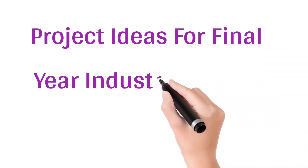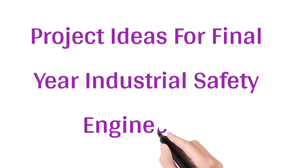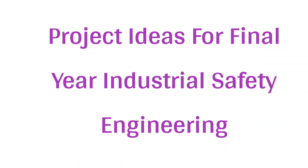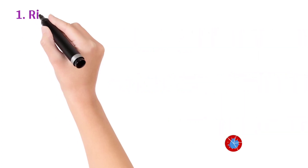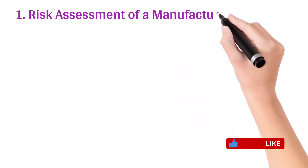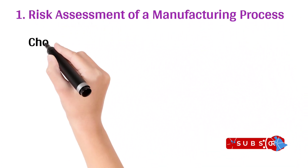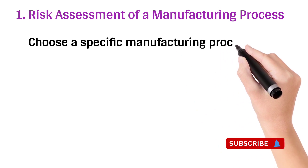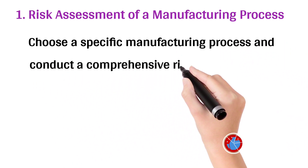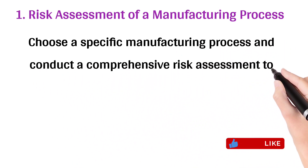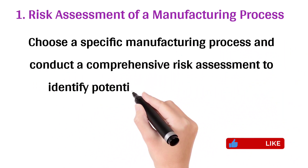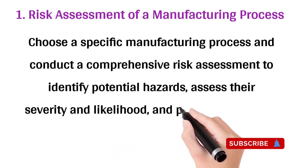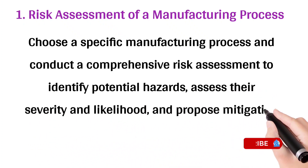Project ideas for final year industrial safety engineering. 1. Risk assessment of a manufacturing process: choose a specific manufacturing process and conduct a comprehensive risk assessment to identify potential hazards, assess their severity and likelihood, and propose mitigation strategies.